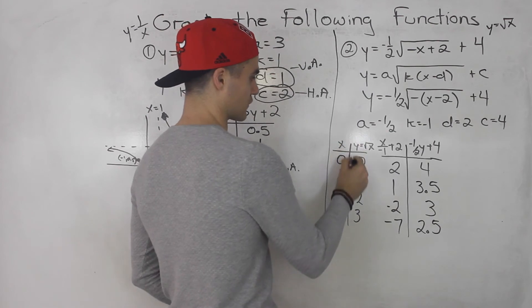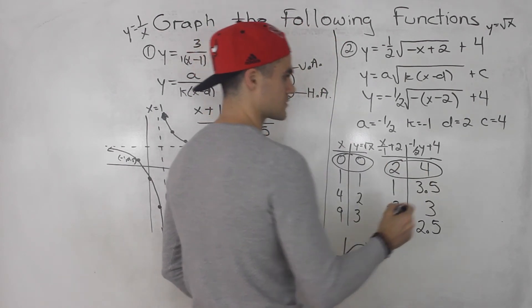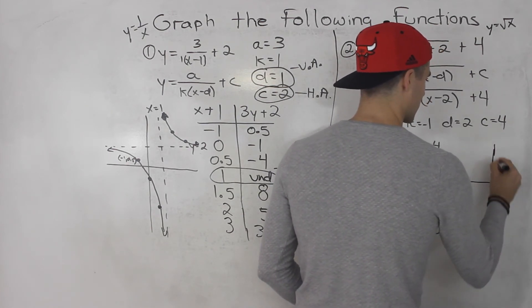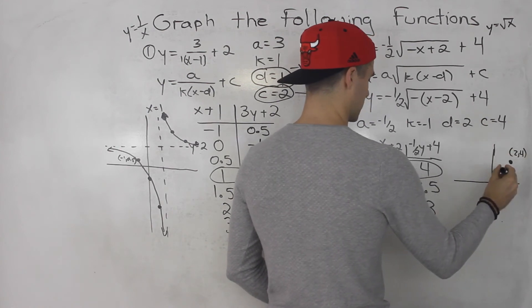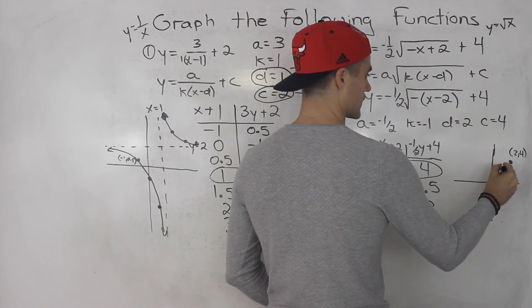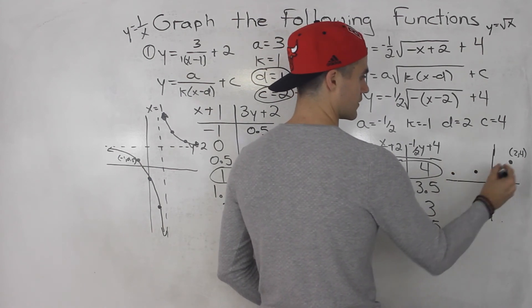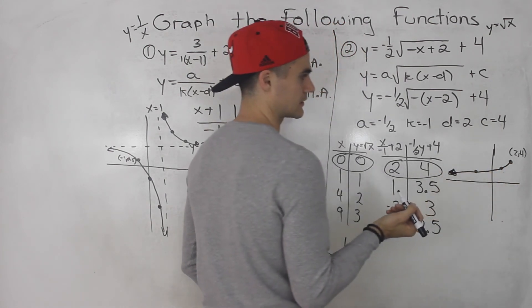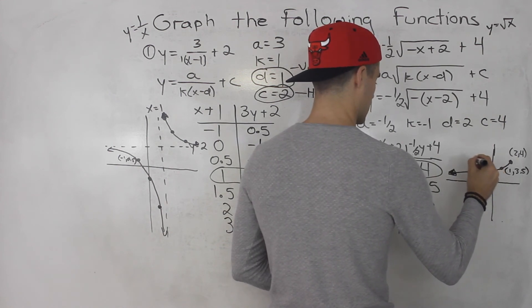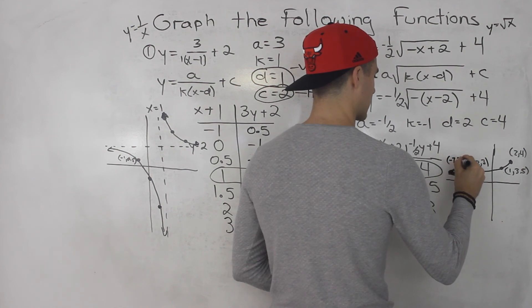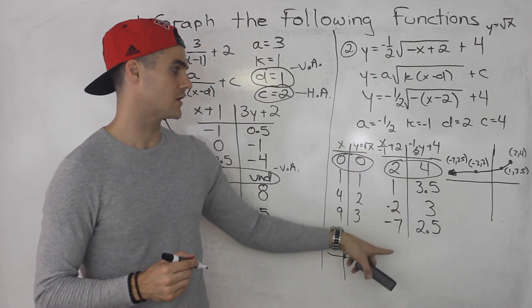The point (0, 0) for root x was the vertex, so the transformed vertex is (2, 4). Plotting all the transformed points: (2, 4) is the vertex up here, (1, 3.5) is over here, (negative 2, 3) is over here, and (negative 7, 2.5) is out here. That's how the transformed function looks — we took root x, transformed it, and plotted those points.